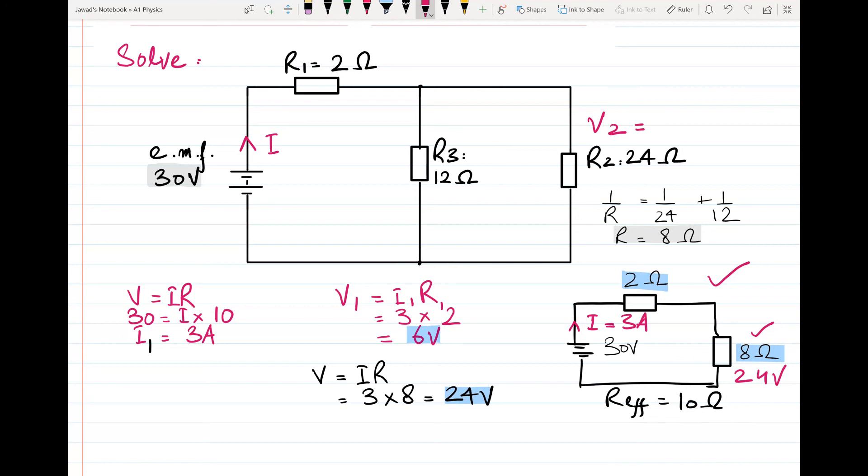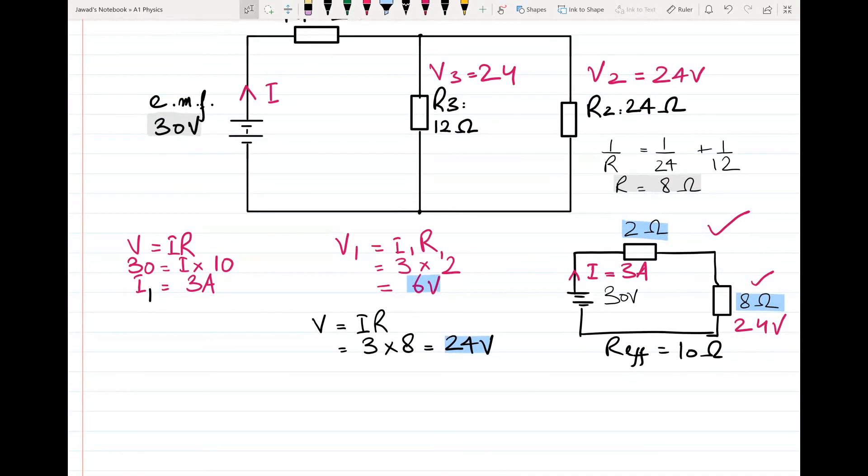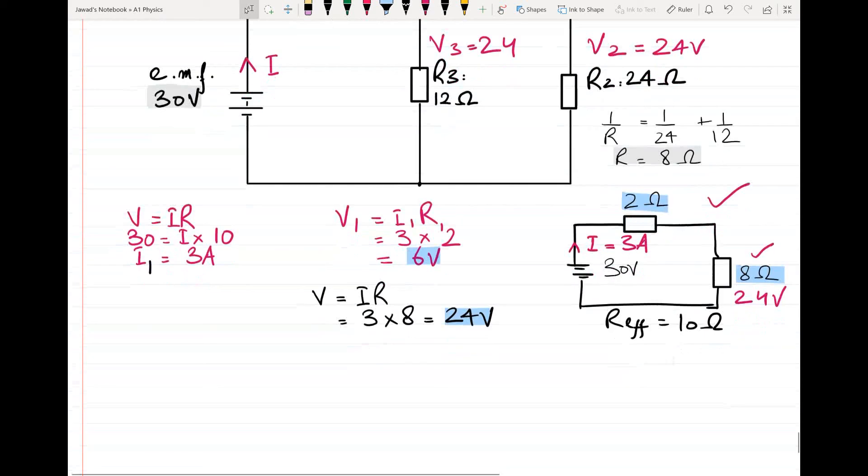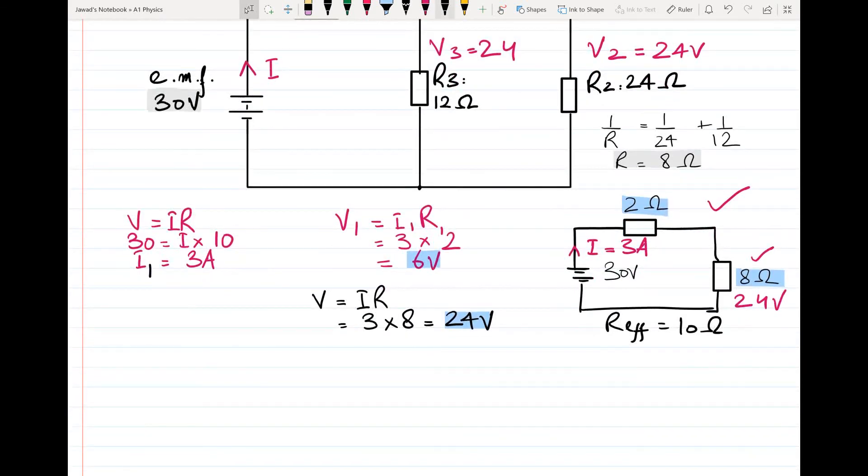V2 will be equal to 24 volts, and similarly the value of V3 will also be equal to 24 volts. Now you are only left with the values of I2 and I3. To find the value of I2, apply V equals IR on R2. So V2 equals I2 times R2. 24 equals I2 times 24. From here, I2 is coming out to be 1 ampere.